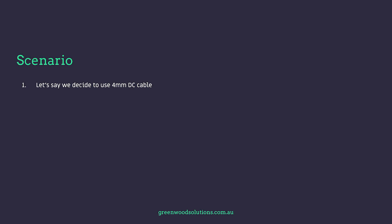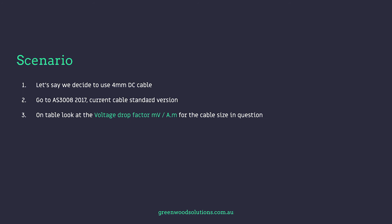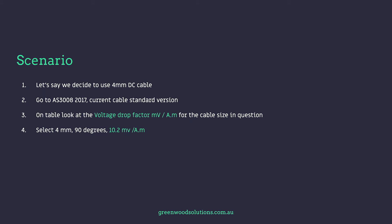Let's say we decide to use a 4mm cable. To look at the cable's characteristics we need access to AS3008 — the 2017 publication is the current one. In this method we look at the millivolt per amp metre rating for the cable in question. Opening AS3008 and looking at the appropriate table, we find that the 4mm cable has a millivolt per amp metre drop of 10.2.